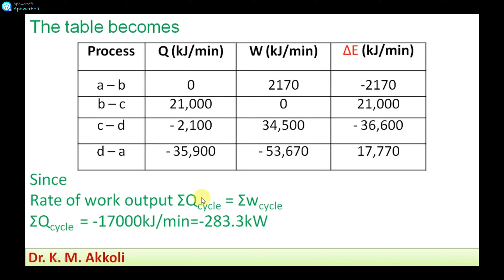To find the net rate of work output, we use the fact that for a cyclic process the summation of heat transfer equals the summation of work transfer. The total heat transfer for 100 cycles per minute is minus 17,000 kilojoules per minute. Converting to kilowatts by dividing by 60, since kilowatts are kilojoules per second, we get minus 283.3 kilowatts as the net rate of work output.